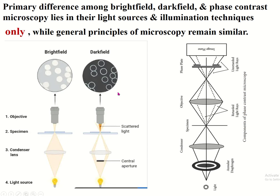In dark field microscopy and phase contrast microscopy, you are able to see living cells, so no staining is required. In dark field microscopy, a non-transparent object is placed at the center, so only peripheral light is condensed by the condenser lens, and the rest of the procedure is the same as bright field microscopy.